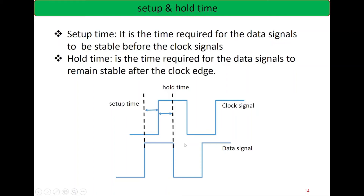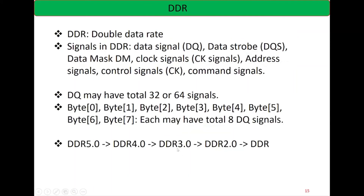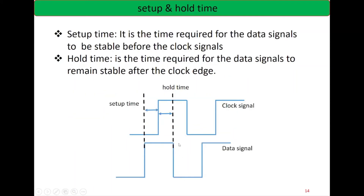If the data signal is stable until this point, we are meeting the hold time requirement. The data signal must remain stable until the required hold time boundary. If the data signal goes low before the hold timing requirement, that means it is not meeting the hold time requirement.